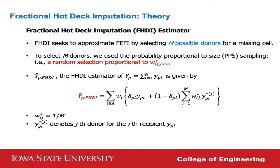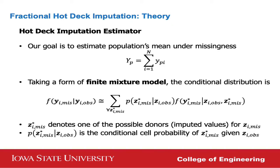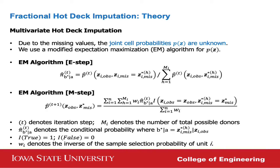Slightly differently, FHDI uses m possible donors for each missing cell. To select the m donors from all possible donors, we use probability proportional to size sampling — random sampling selection proportional to the sampling weight W_ij^FEFI. The FHDI estimator is given accordingly. The theory is based on the finite mixture model form, assuming the conditional distribution as shown. Because of missingness, joint cell probabilities are unknown at the start, so we use a modified expectation-maximization algorithm to estimate them.